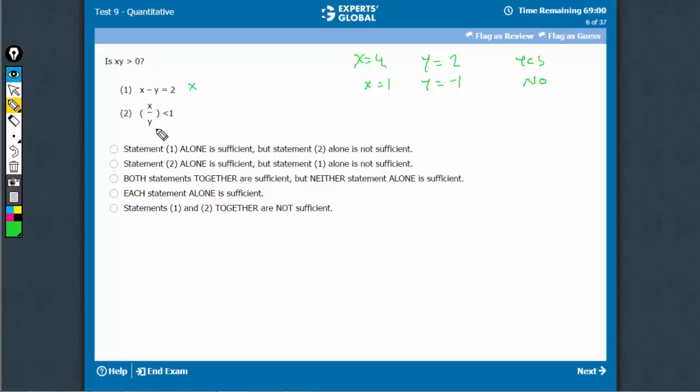x upon y is less than 1. This alone, of course, would not be sufficient because there is nothing given here. x upon y is less than 1. In case such as this, see, the answer would be no. That xy is not greater than 0, while x upon y is less than 1 or in cases where y is greater than x.